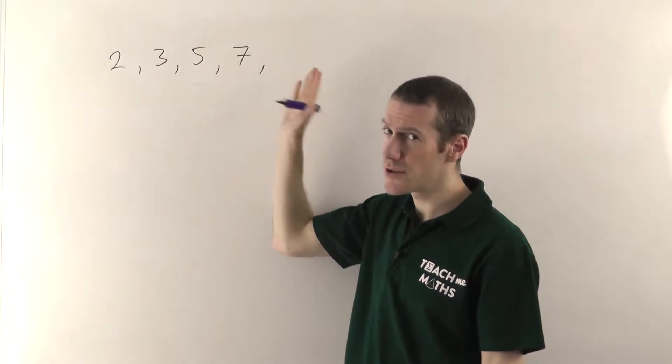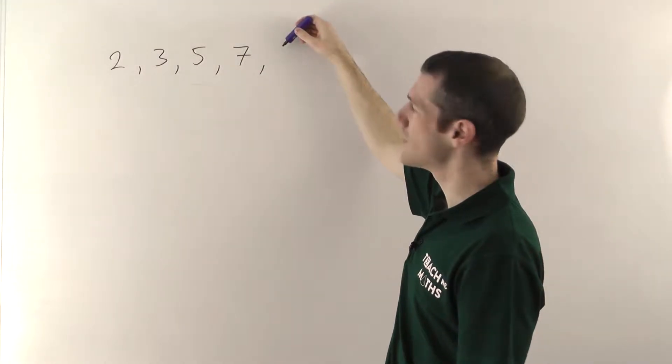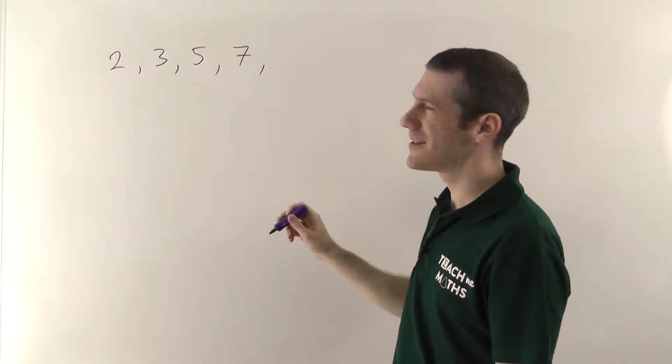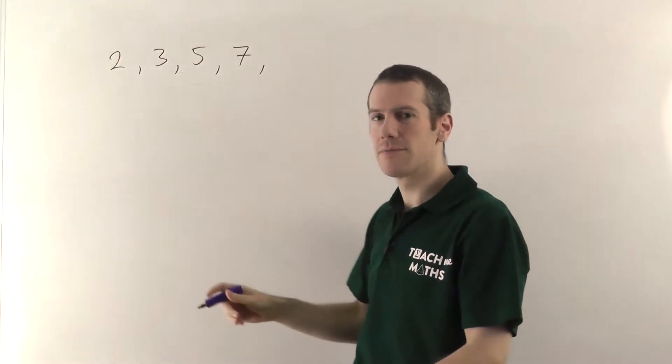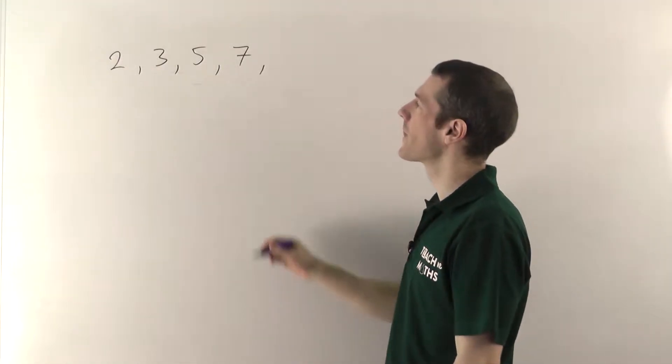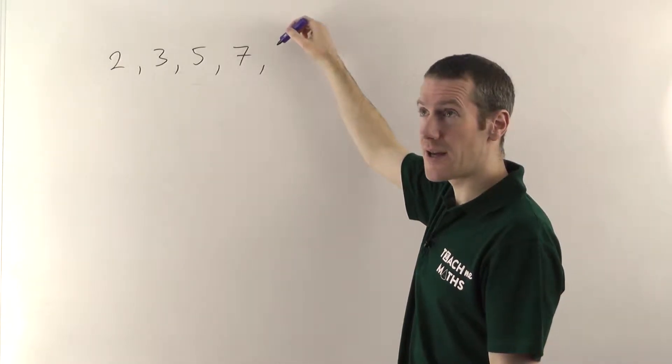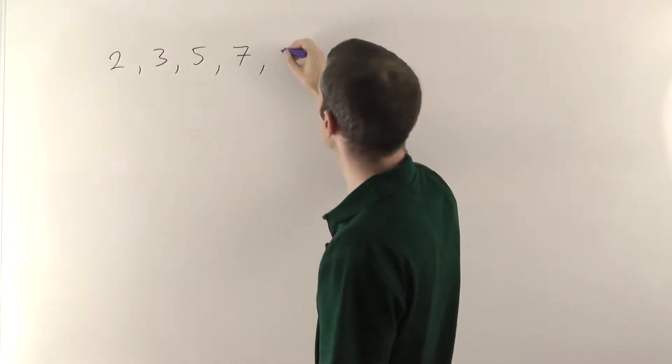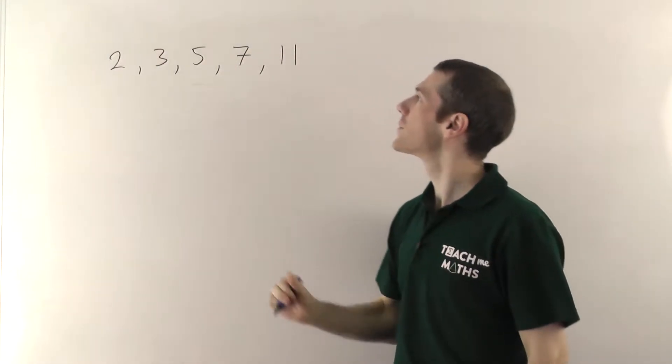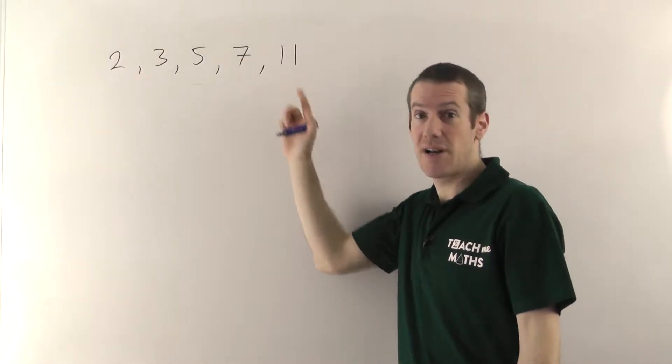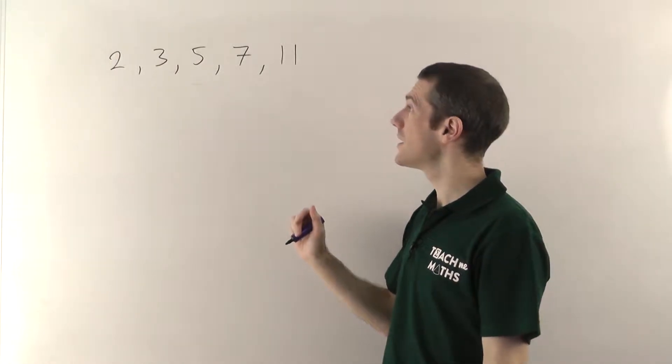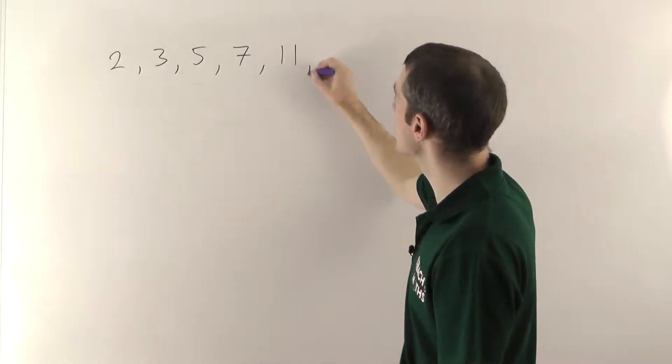Are we going to have all the odd numbers? Well let's try the next one, 9. No, because 9 is divisible by 3, so 9 is not a prime number. There's no point trying any more even numbers, so we'll try 11, and yes, 11 is a prime number, because nothing else goes into 11 except 1 and 11. 13 will be the next odd number, and yes, I don't think anything else goes into 13.